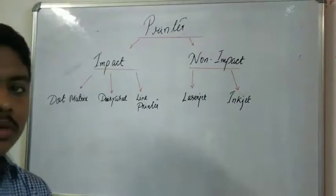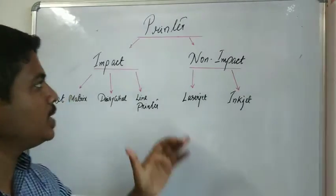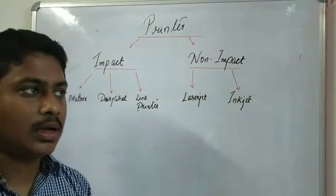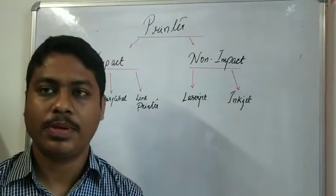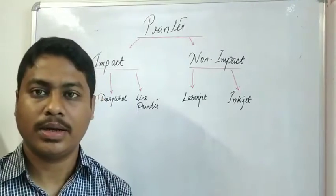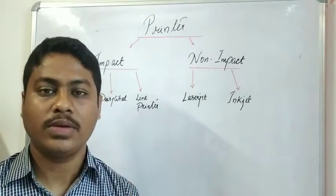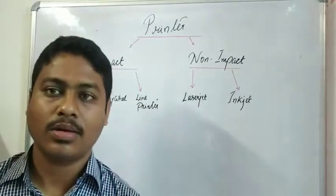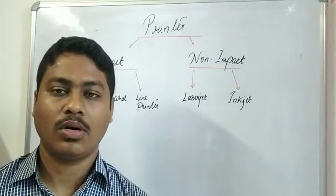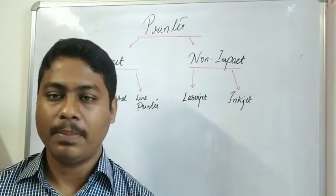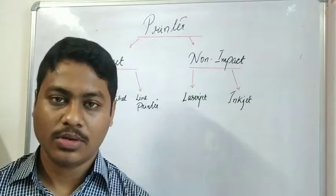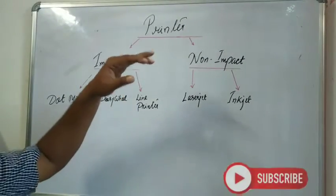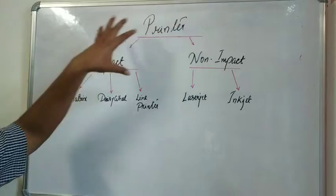Today we will be discussing printers and the types of printers. Printers are mainly output devices used to print documents, graphics, or text on paper. We can divide printers into two parts: impact printers and non-impact printers.